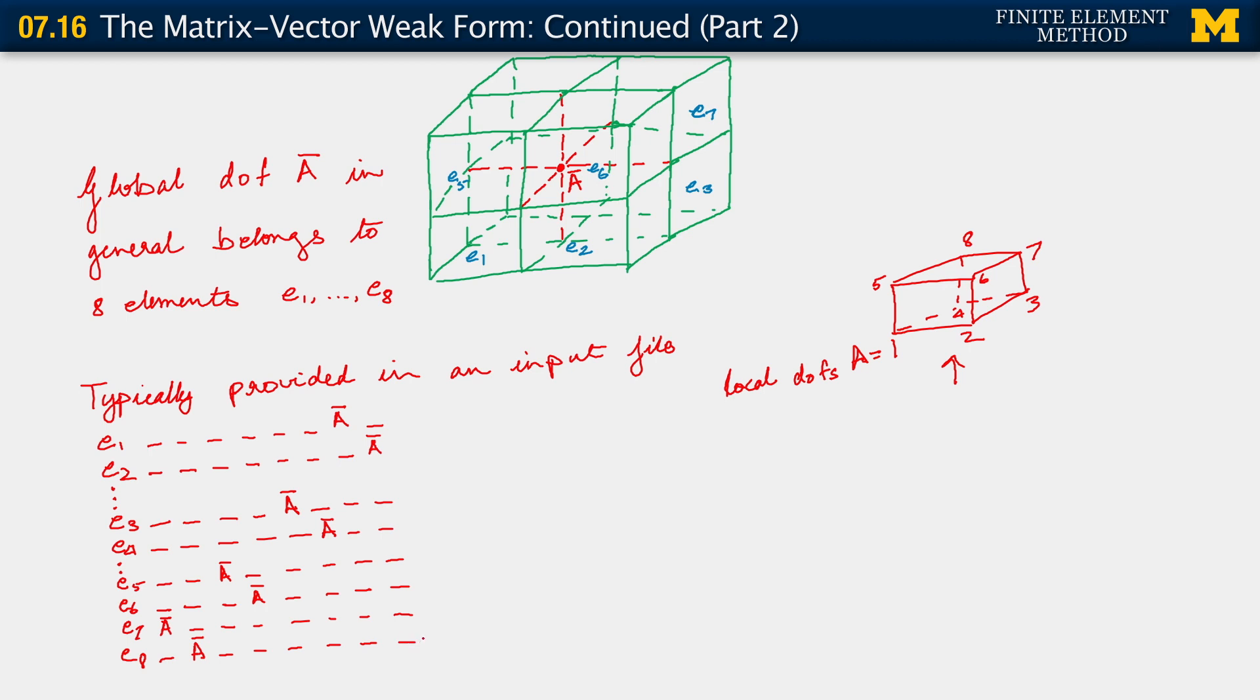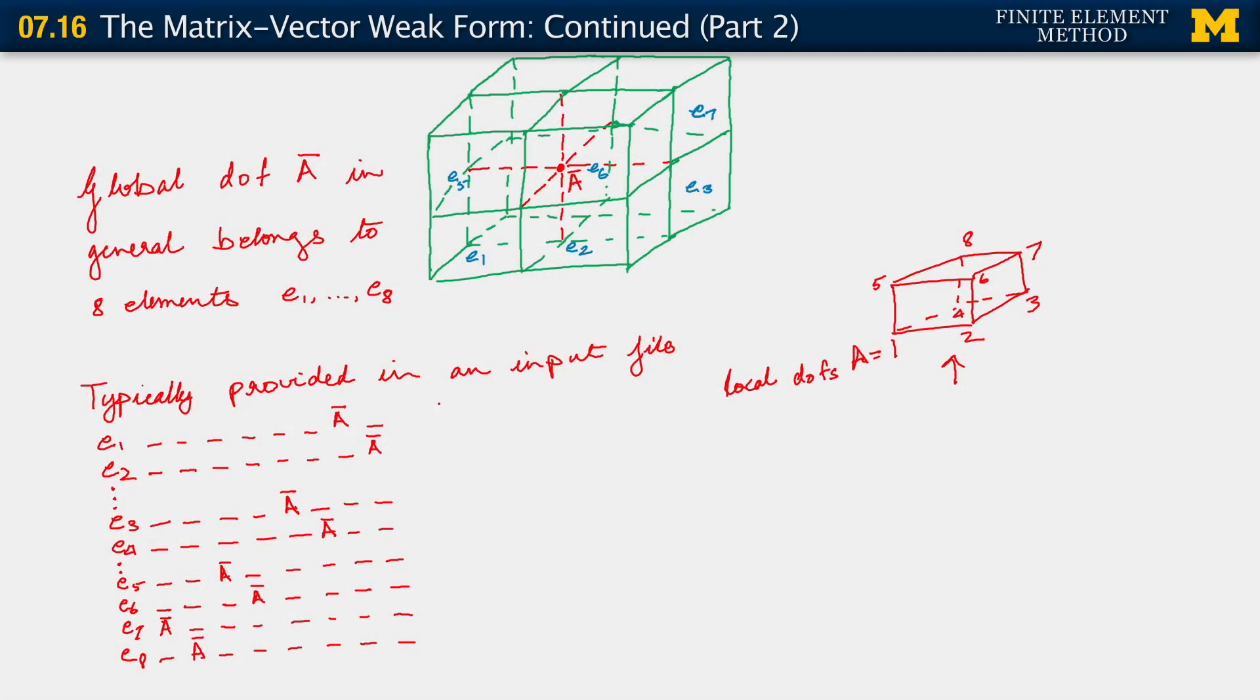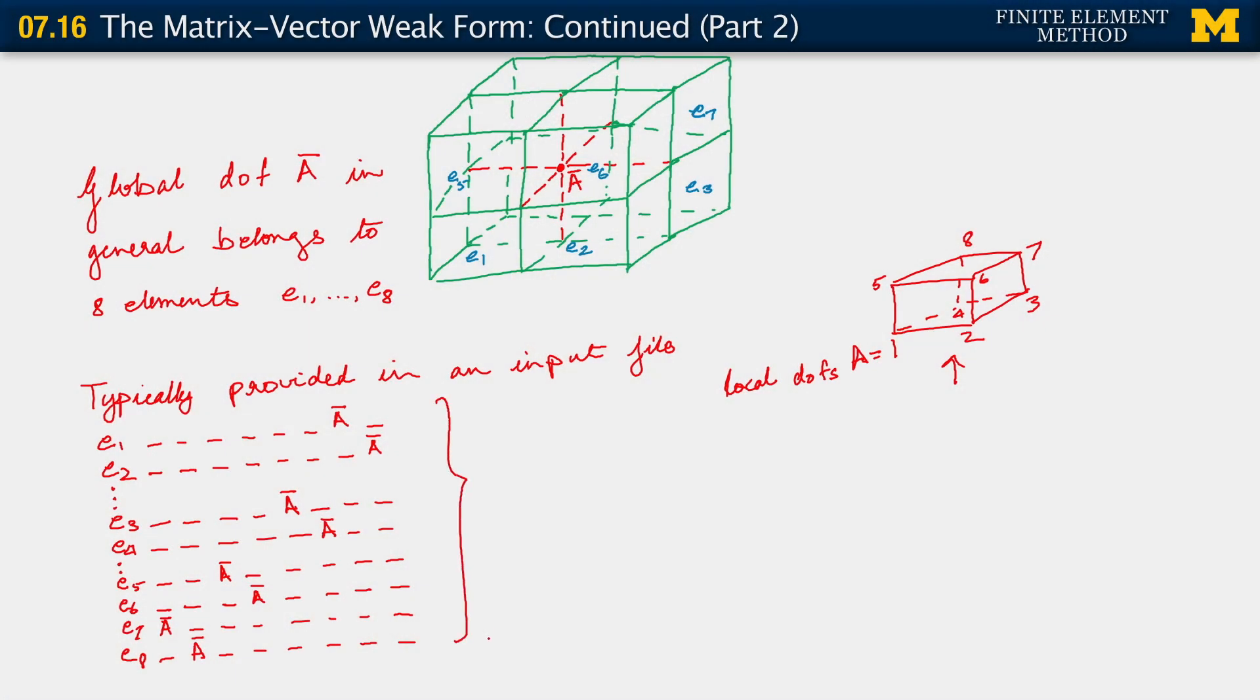So this information is the critical bit that carries all we need to know about mesh connectivity. And now, as you have more and more elements in the mesh, you would have a similar array, if you like, for each element. Some authors and some books refer to this as a local destination array, but that's just a very specific name for it. The important thing is that we need to provide this sort of information.